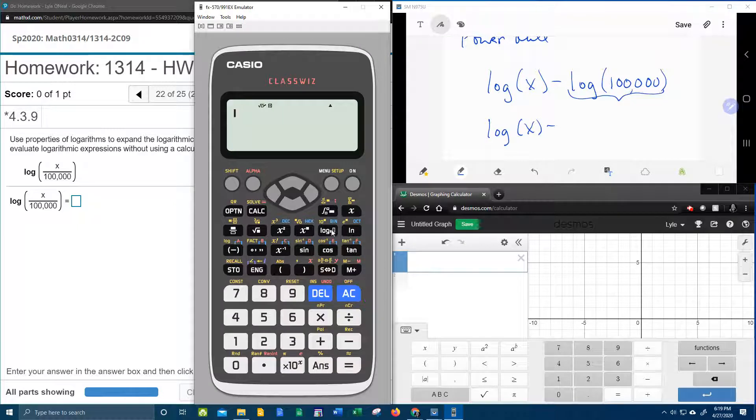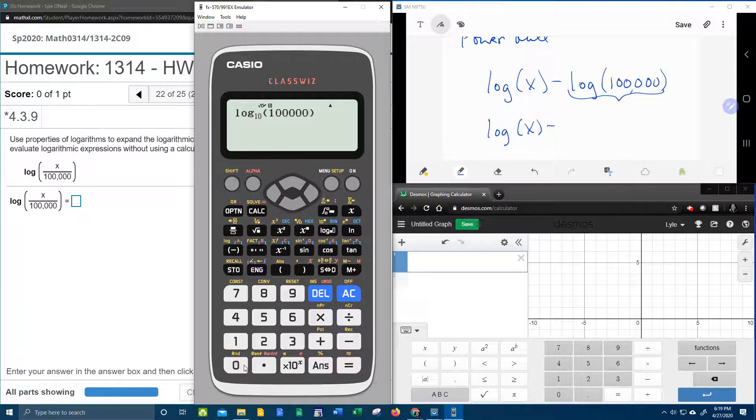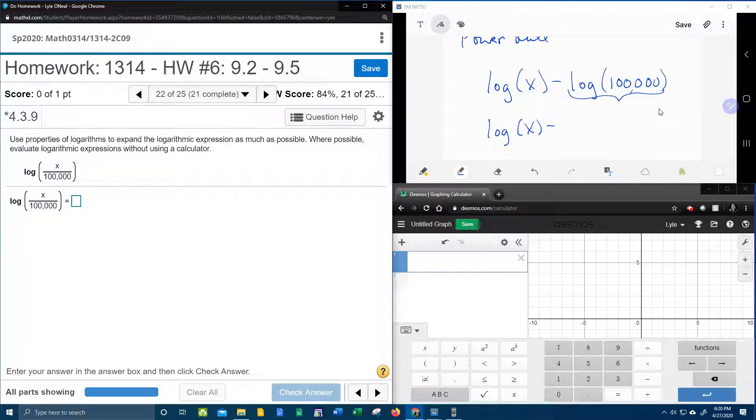That's going to be log - remember I said the base is 10 if it's not there - of 100,000. That's going to be 5. So all of this will simplify down to just 5.